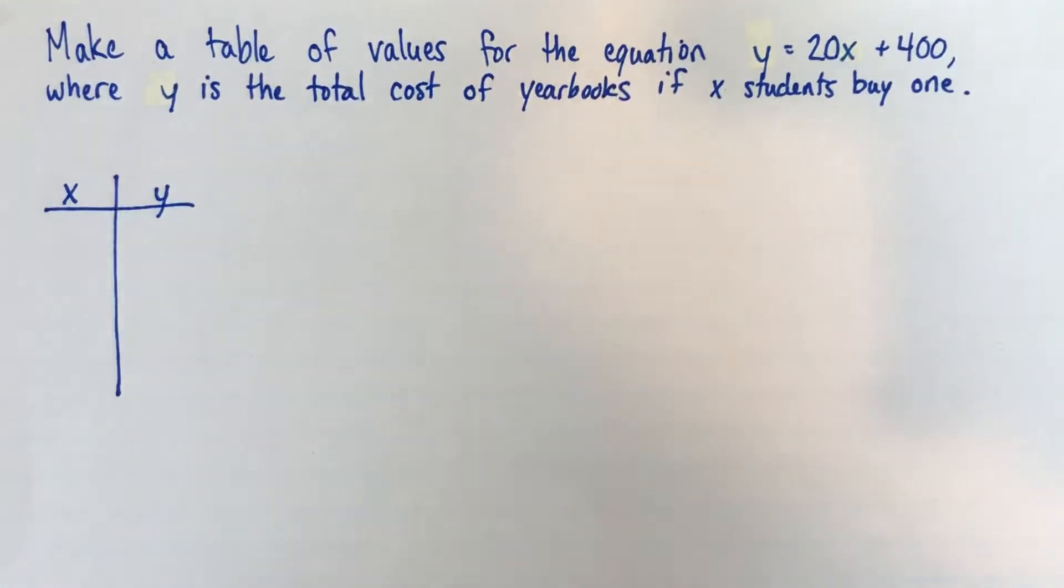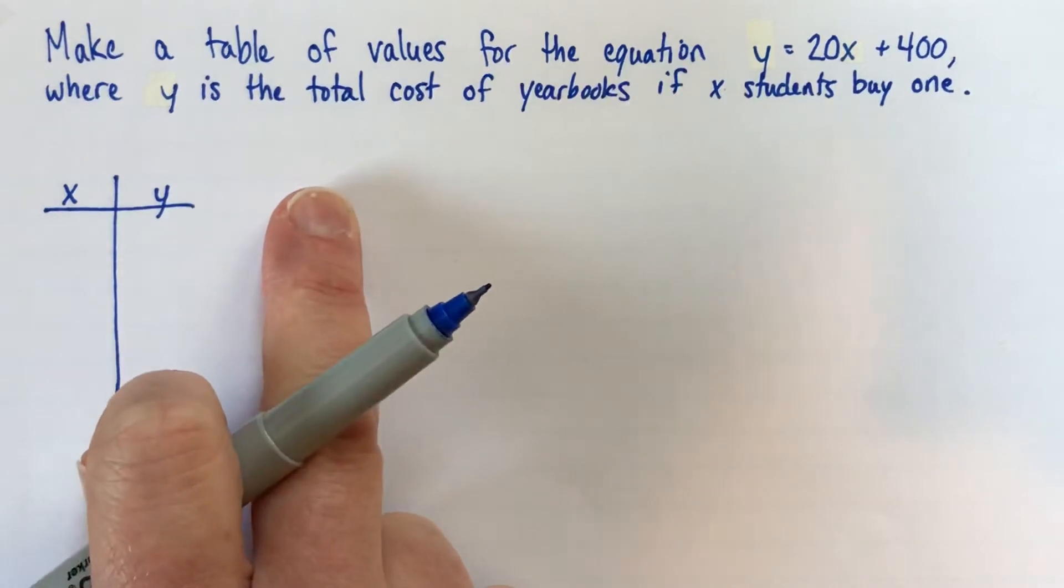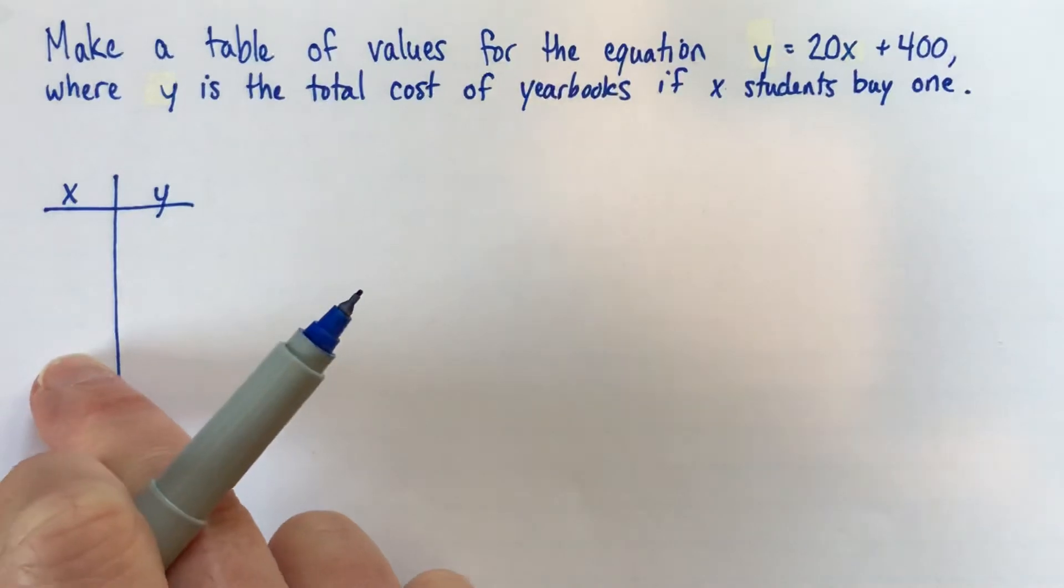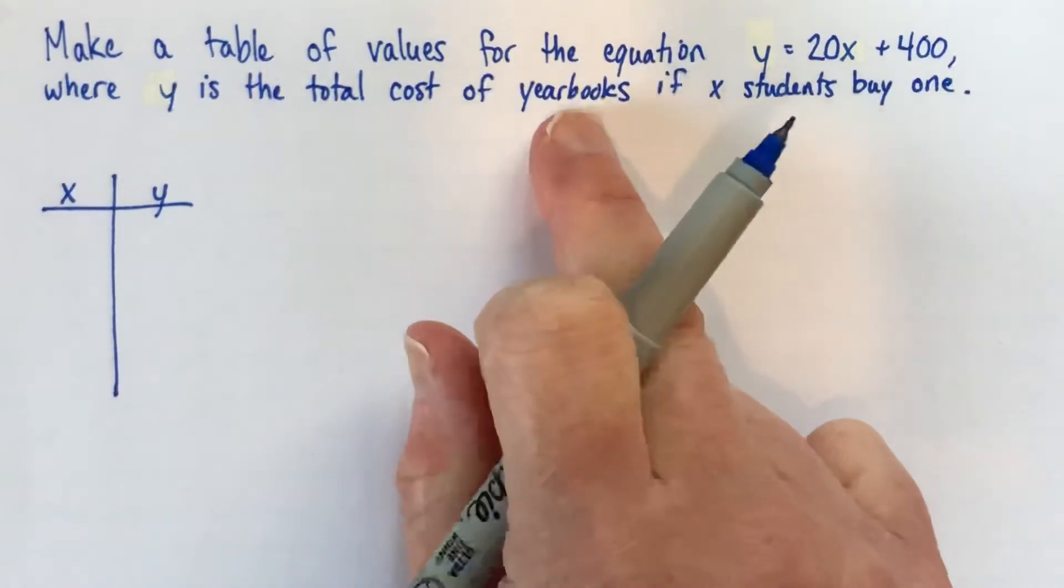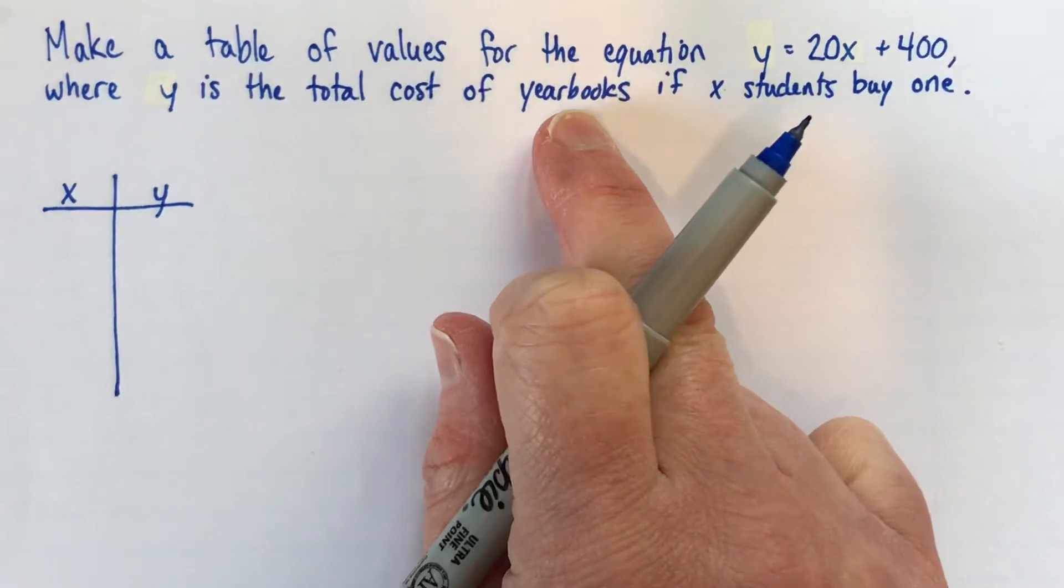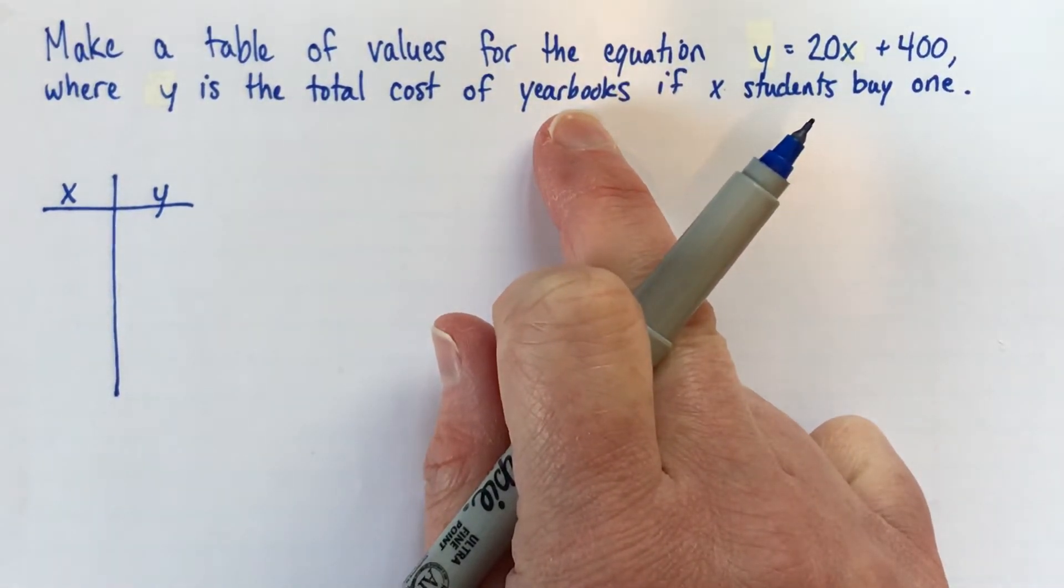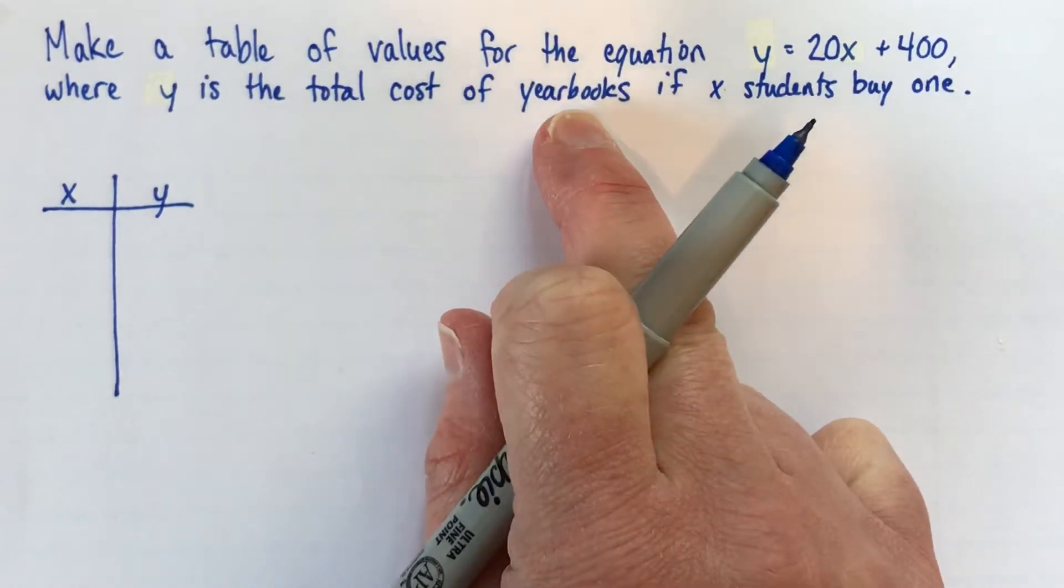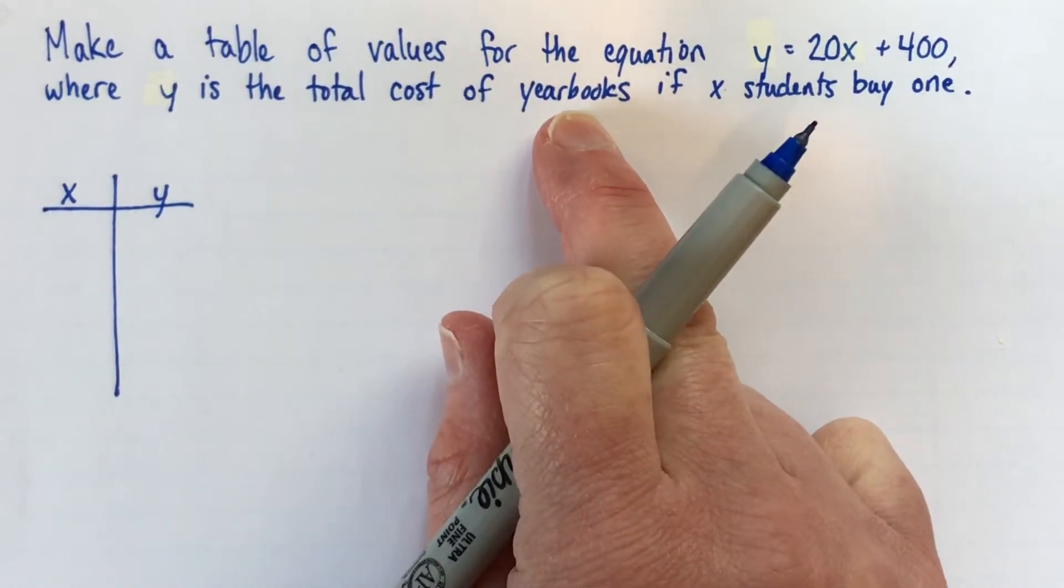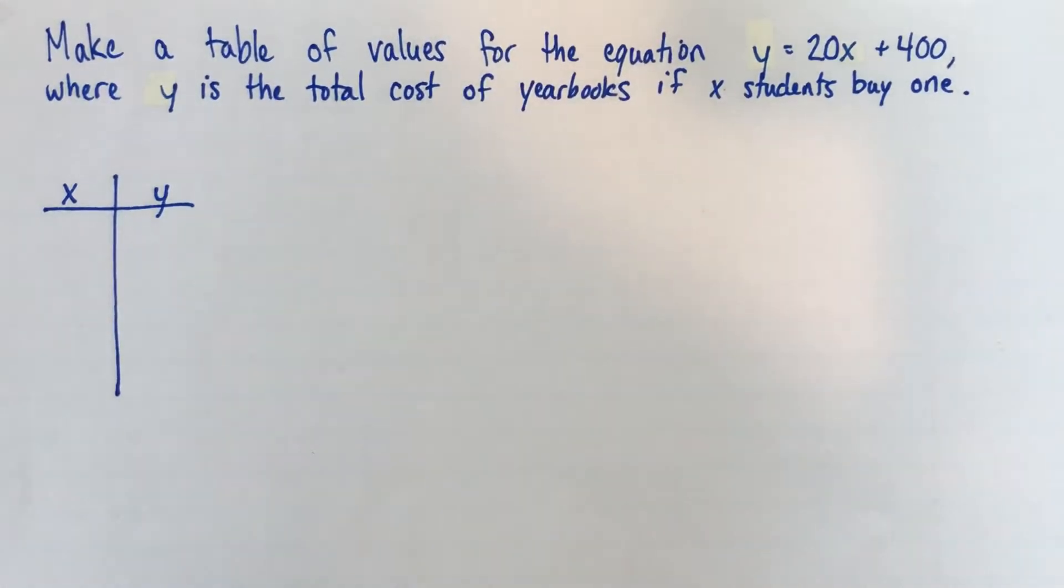Alright, so the first decision we need to make when we make a table of values is what x values to use. And I think if we know a context, we should choose values that are appropriate for the context. So in this case, it doesn't make sense to use like 1, 2, 3, 4, 5, because it's unlikely, I think, that we're getting only five yearbooks. Obviously, it would depend on what kind of school you were imagining, whether it was a big institution with thousands of students, or just a really small school. But let's say maybe we had like 800 students.